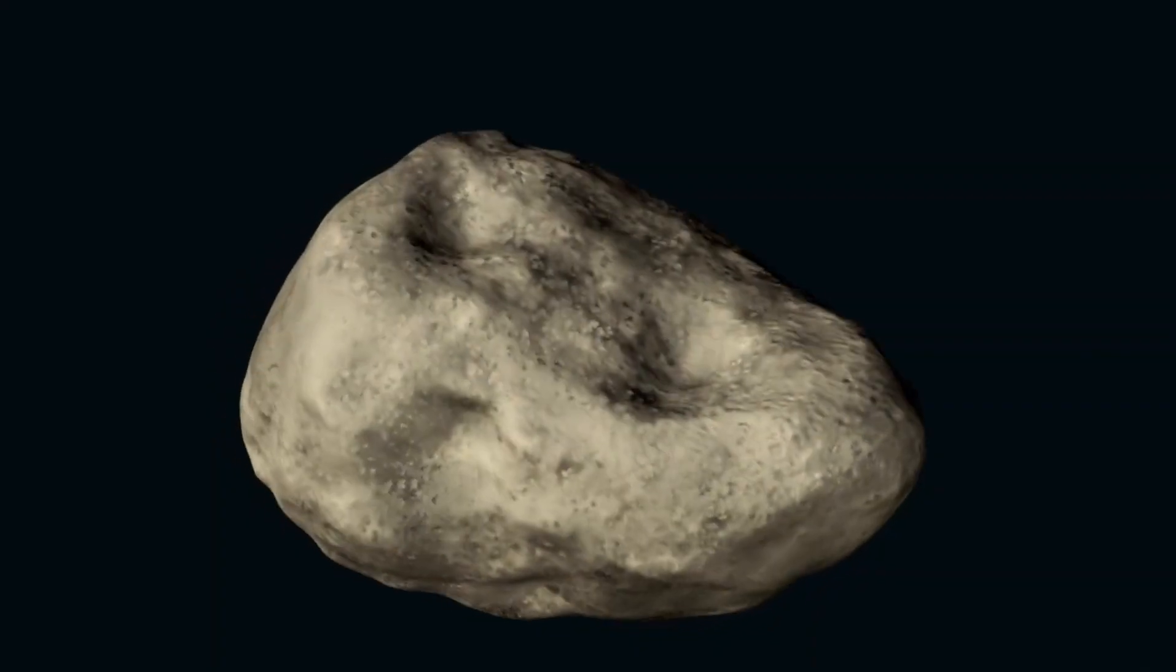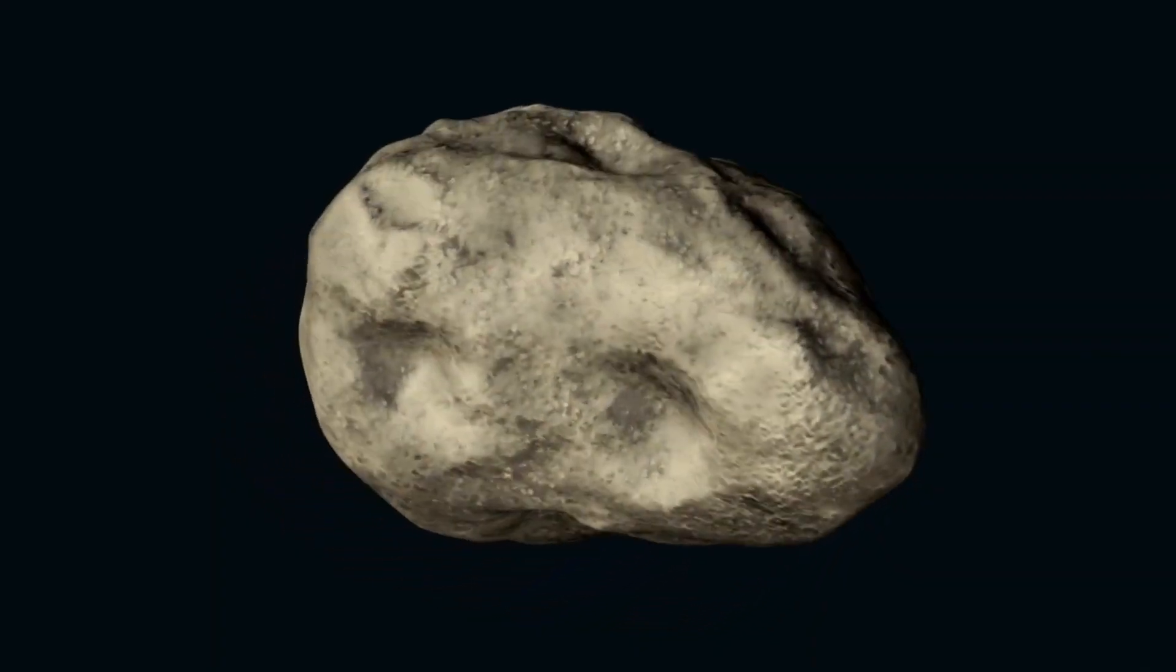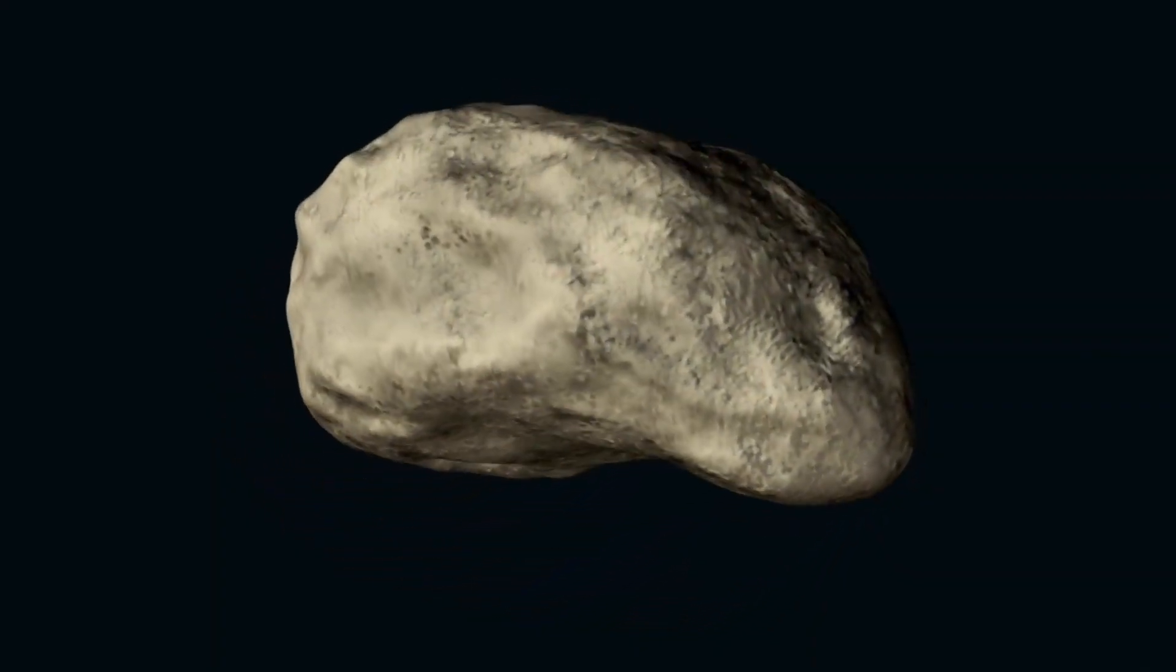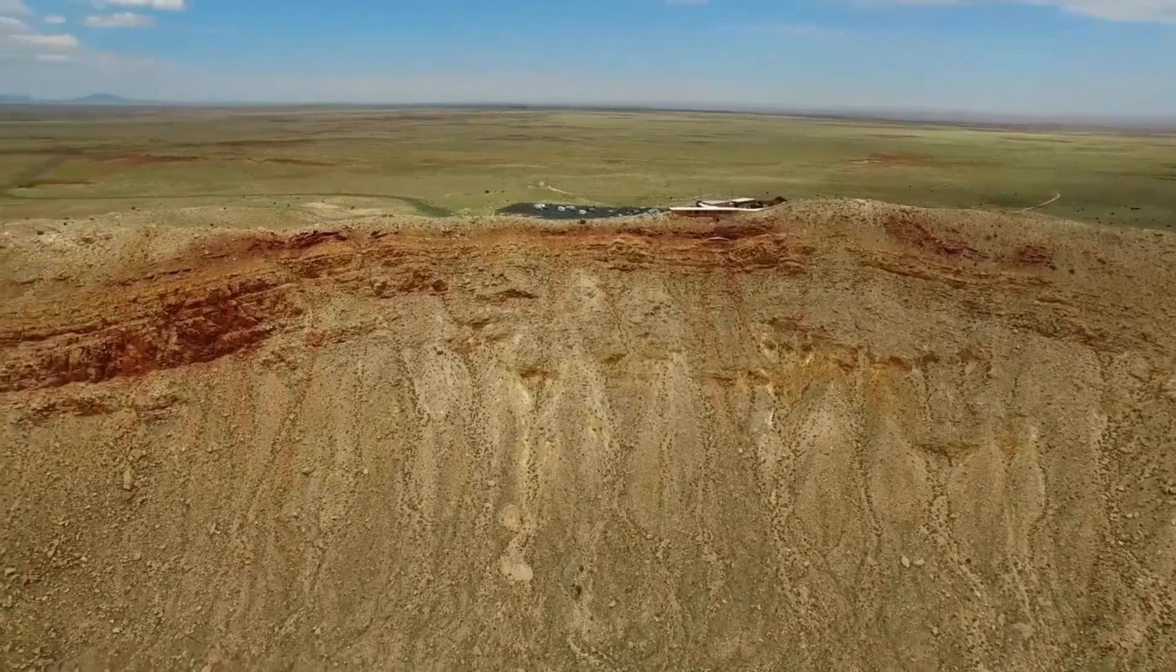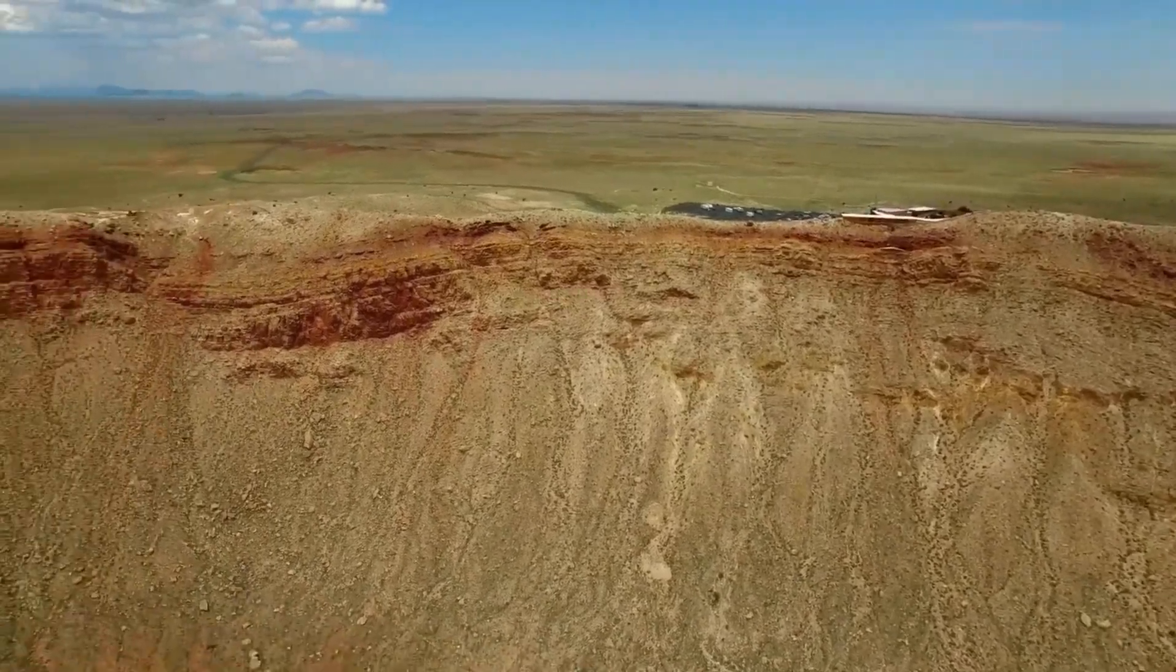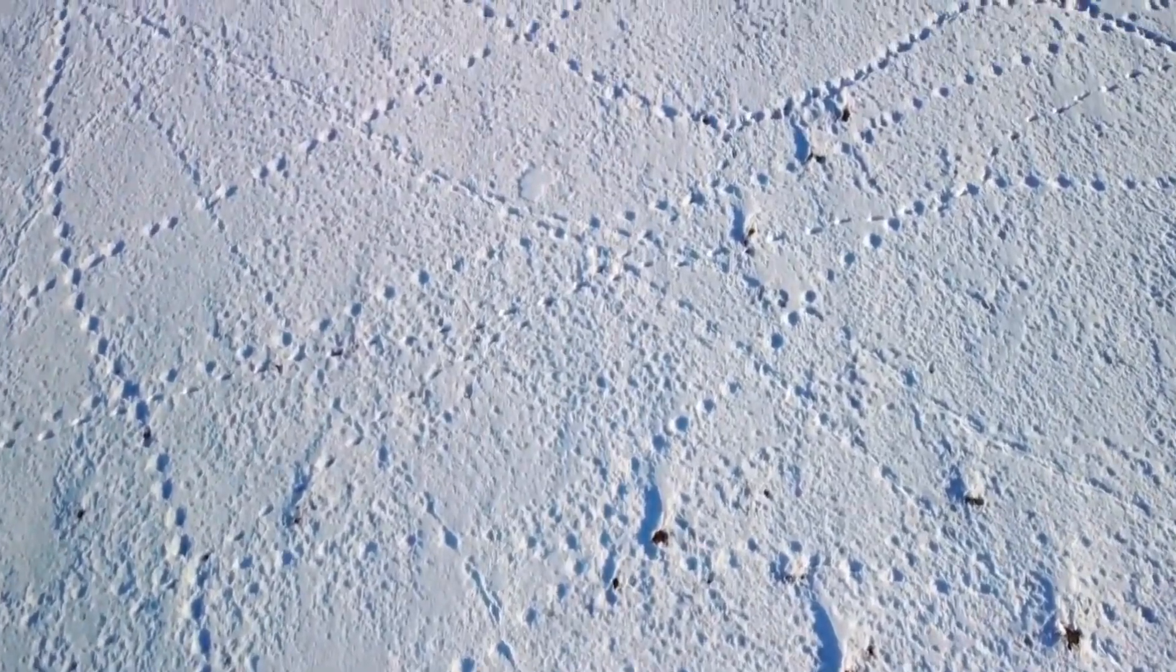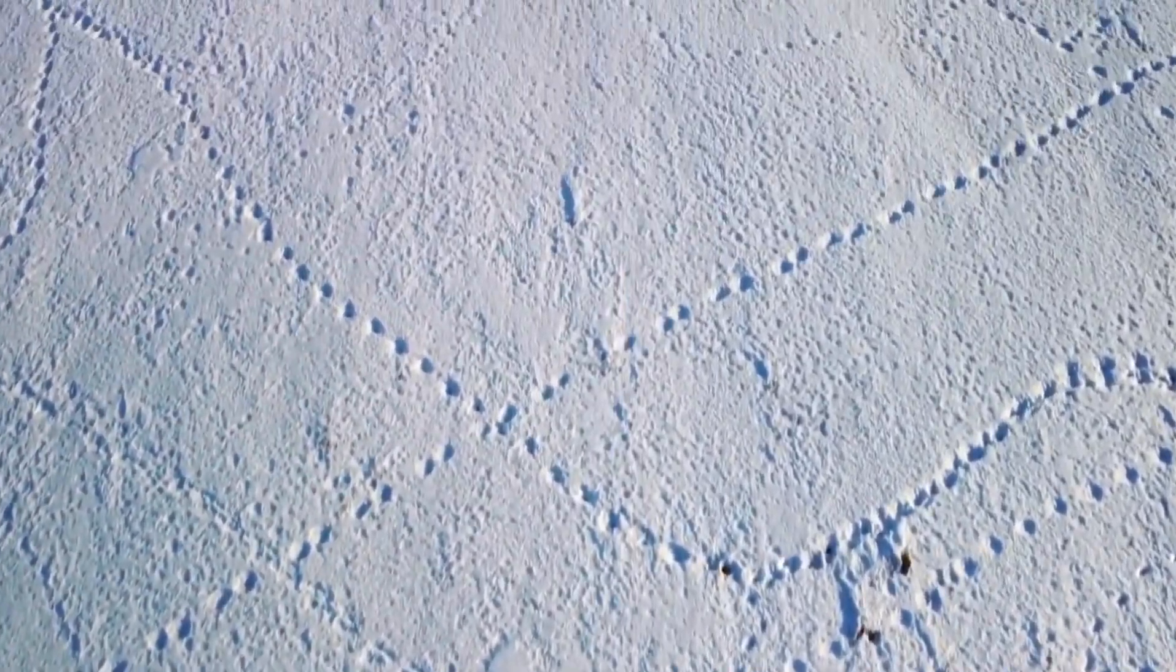At first, Pluto seemed like just another frozen, forgotten rock, a distant relic at the edge of our solar system. But the truth is far more extraordinary than anyone ever imagined. What if I told you that beneath Pluto's icy, desolate surface, there's something hiding, a secret so huge it could change everything we thought we knew about the cosmos?